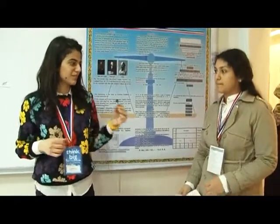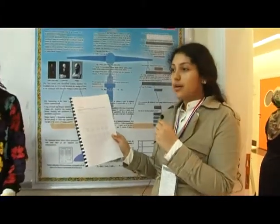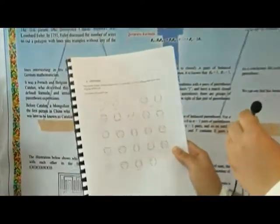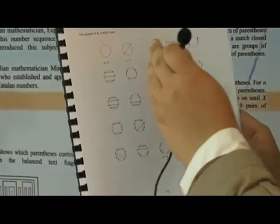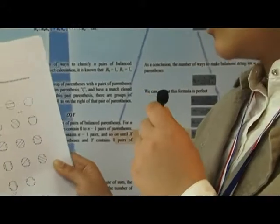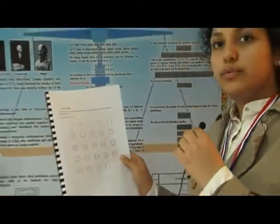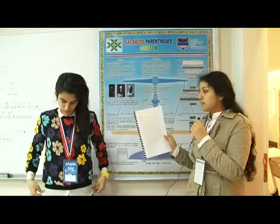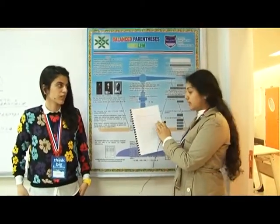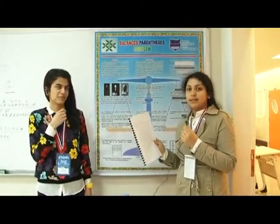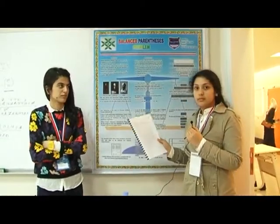We have one more example: how many ways can people sitting at a round table shake hands without their hands crossing. If we have one pair of persons, there is only one way. With two pairs there are two ways, and with three pairs there are five ways of shaking hands without crossing. And so on — the pattern continues in the same way.